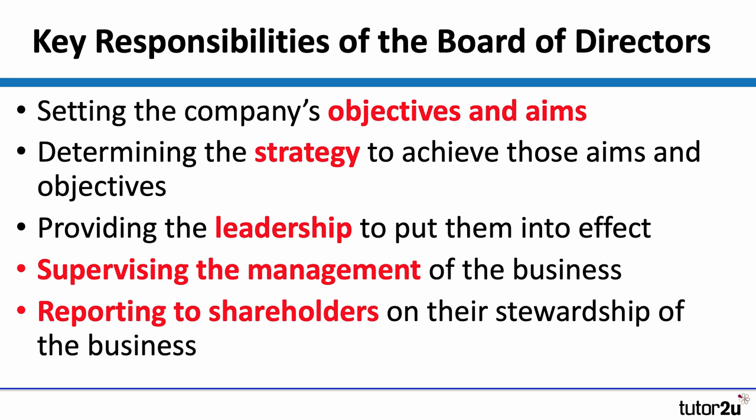So what are these key responsibilities of directors in a system of corporate governance? Clearly they're responsible for setting the direction and the objectives of the business — the aims and objectives. A key part of strategy is to do that and then to determine the most appropriate strategy to achieve those aims and objectives. This includes providing the leadership for the entire organisation to make the strategy effective, and to supervise management. Within the hierarchy there'll be different layers of management from senior through middle management and possibly down to junior management, and the directors are responsible for supervising the managers they put in place.